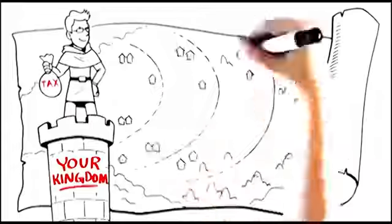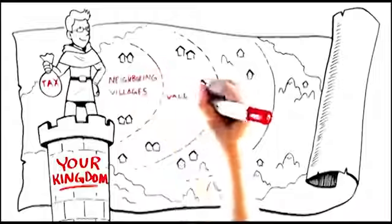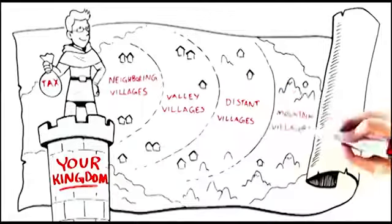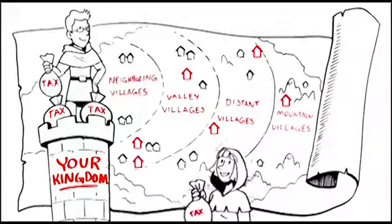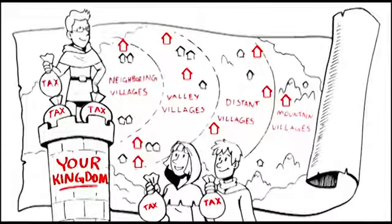Your kingdom can span all the way across four distinct lands: neighboring villages, valley villages, distant villages, and mountain villages. Simply bring in two taxpaying kindred into your kingdom and you'll be able to collect taxes on all of the neighboring villages of your kingdom.